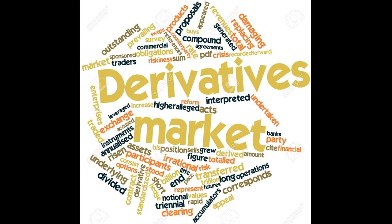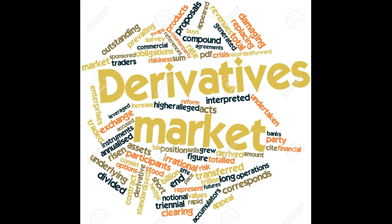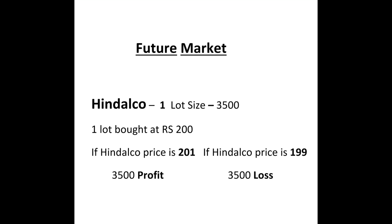But in futures, lot sizes are fixed — like 1,000 shares for one lot or 2,000 shares for one lot. Likewise, lot sizes have been fixed for each company. In the cash market you can buy a share only if you have the full margin, but in the futures market you can buy with just an initial margin. For example, if you take Hindalco, its lot size is 3,500 shares.